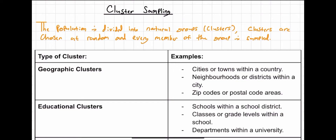The answer would be cluster sampling because cluster sampling is quite complex in all the things you need to do. The definition of a cluster sample is when the population is divided into natural groups or clusters, these groups are chosen at random, and every member of the group is sampled.